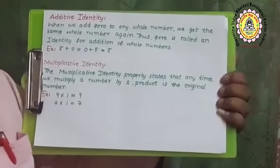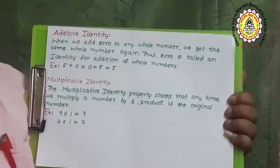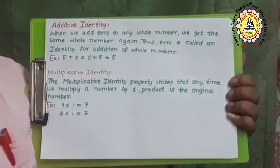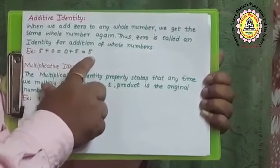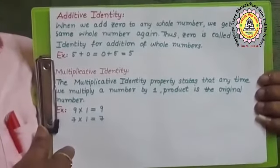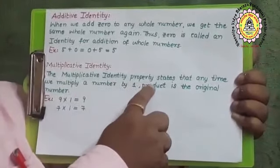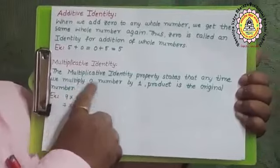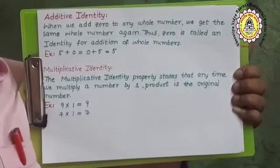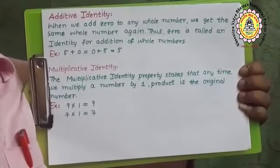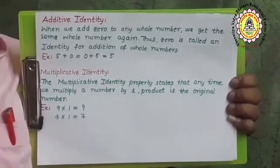When you add 0 to any whole number, you get the same whole number again. Thus 0 is called the additive identity element for whole numbers under addition. For example, 5 plus 0 or 0 plus 5 equals 5. So 0 is the additive identity. For multiplicative identity: any time you multiply a number by 1, the product is the original number. If you multiply any number by 1, you get the same number. So 1 is called the multiplicative identity for whole numbers.